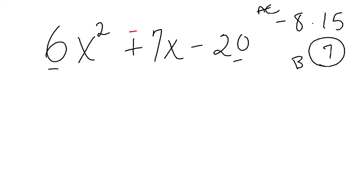That's our A, C. So I'm going to split the 7x into two terms, and I can put them in either order, but I'll just put them in the order that I found them. So I found minus 8x plus 15x minus 20.